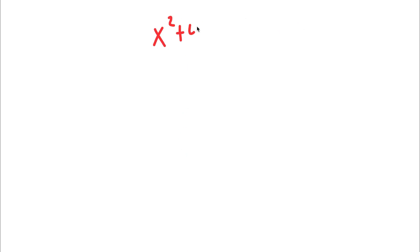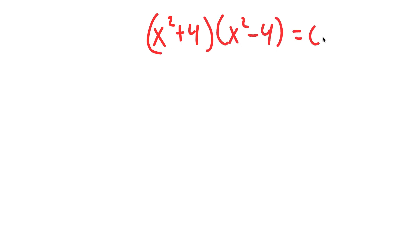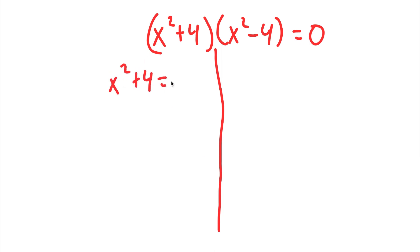So I have x to the power of 2 plus 4 times x to the power of 2 minus 4 is equal to 0. This gives me two equations: x to the power of 2 plus 4 is equal to 0, and x to the power of 2 minus 4 is equal to 0.